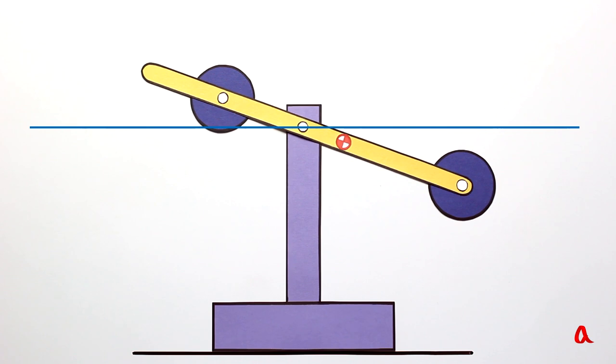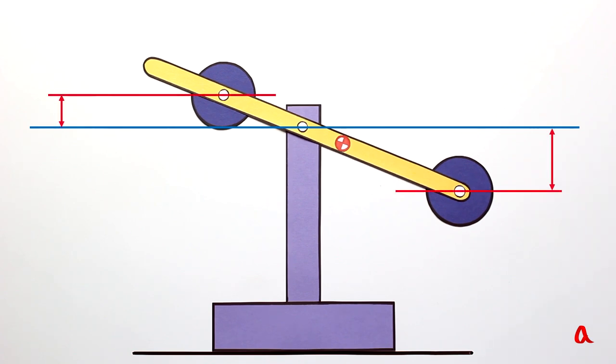When the lever gets tilted, the load on the right side goes down to a greater distance than the load on the left side goes up.